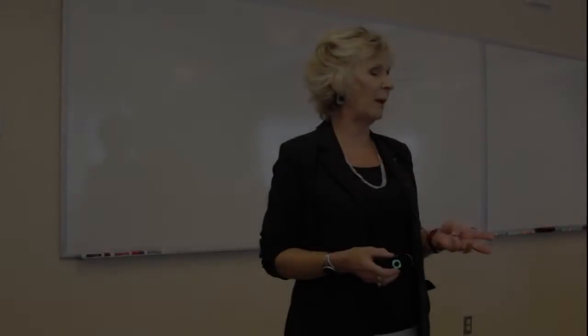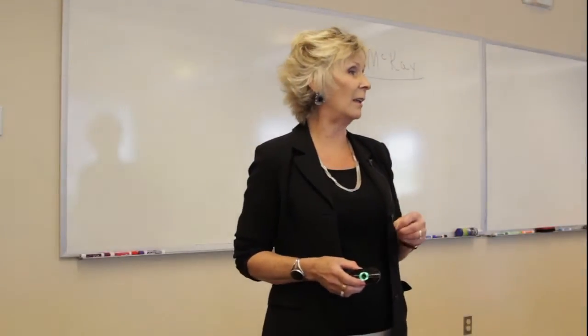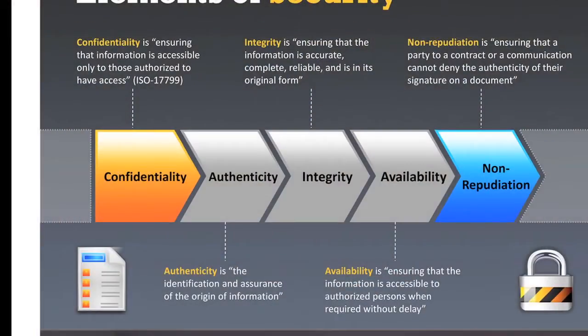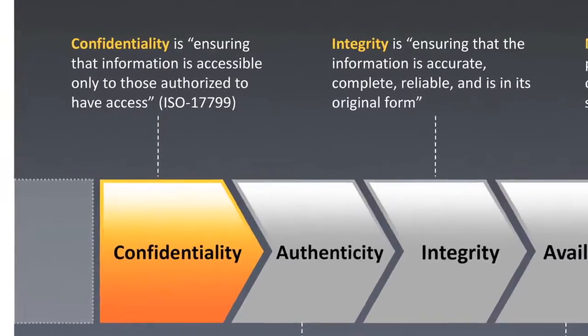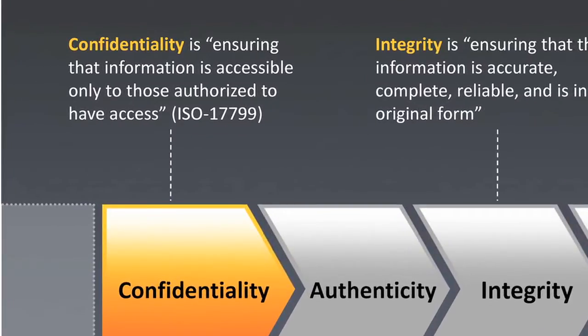There are three aspects of computer security called CIA: confidentiality, integrity, and availability. Those are the three essential things that we're concerned about. Confidentiality means that your information — your social security number, your home address, things like that — remain private.